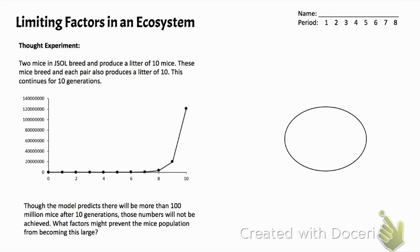What we need to do first is always label our axes. Our independent variable in this experiment is the number of generations, and our dependent variable on the y-axis is population size. We're going to call this graph 'Population Size of Mice in JSOL.'